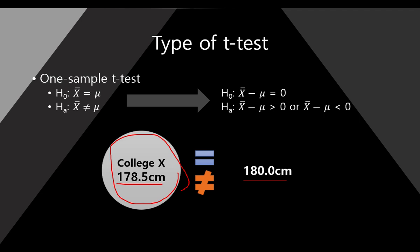So here, we just change it. Here, the number zero. Because we just move this mu into the left side.